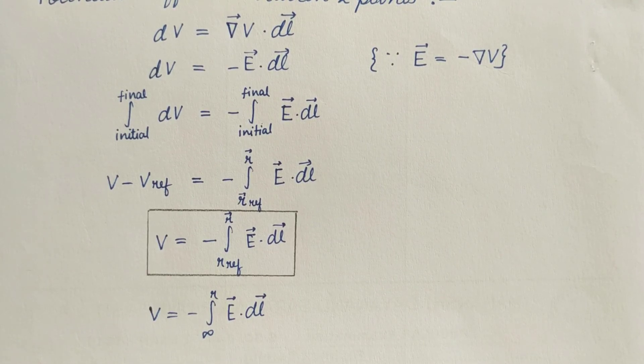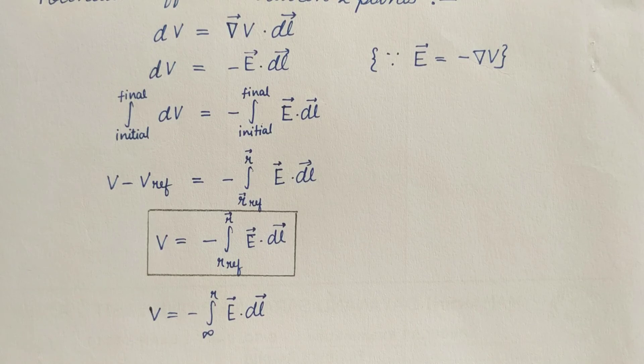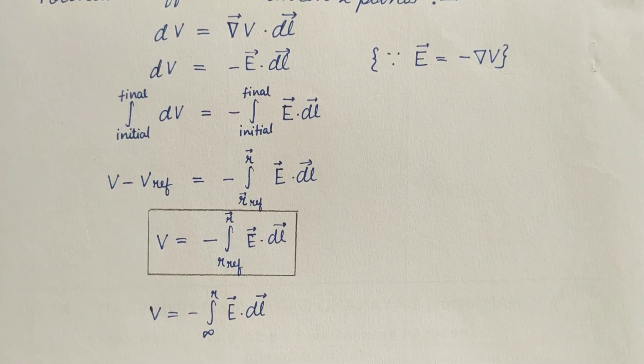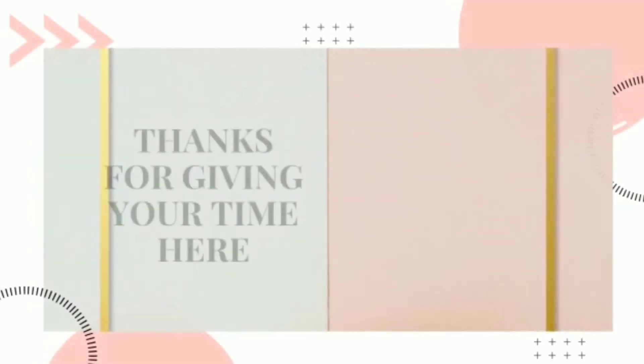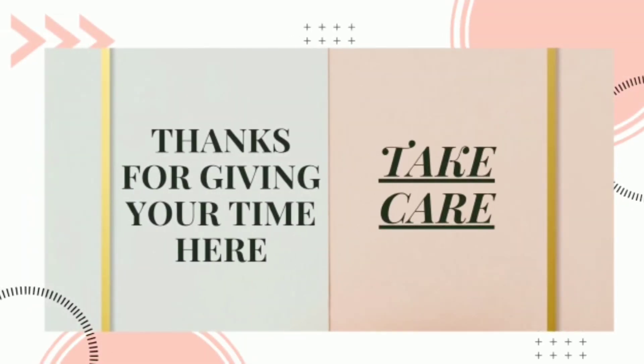That's it under the scalar potential. We use scalar potential V because it is easy to solve scalar quantities than vector quantities. That's it by my side. Hope you found this video productive. Thanks for giving your time here. Take care.